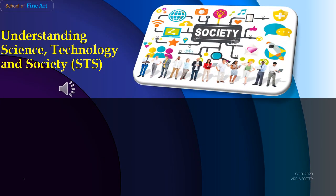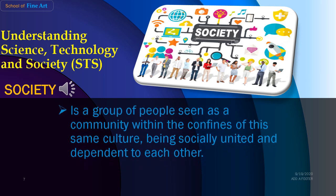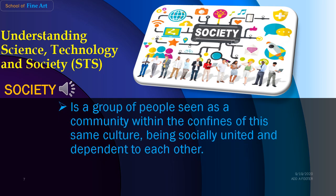Now let us move on to society and its meaning. Society is a group of people seen as a community within the confines of the same culture. Being socially united and dependent on each other, a society supports its members to attain needs that they alone cannot fulfill. Most often, a society is made up of varied individuals, which may also refer to an organized voluntary association of people for religious, cultural, scientific, and political purposes.